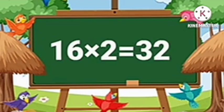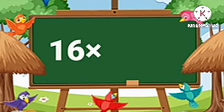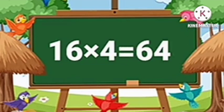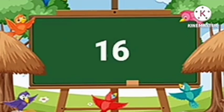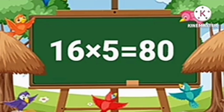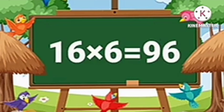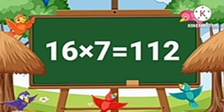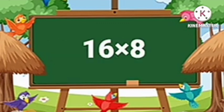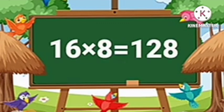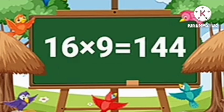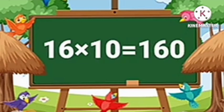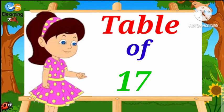Table of Sixteen. Sixteen-One's are Sixteen. Sixteen-Two's are Thirty-Two. Sixteen-Three's are Forty-Eight. Sixteen-Four's are Sixty-Four. Sixteen-Five's are Eighty. Sixteen-Six's are Ninety-Six. Sixteen-Seven's are One Hundred and Twelve. Sixteen-Eight's are One Hundred and Twenty-Eight. Sixteen-Nine's are One Hundred and Forty-Four. Sixteen-Ten's are One Hundred and Sixty.